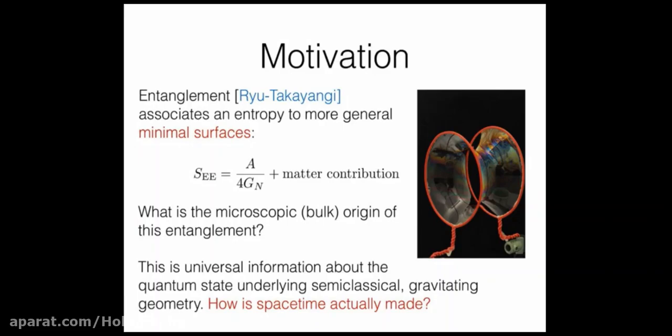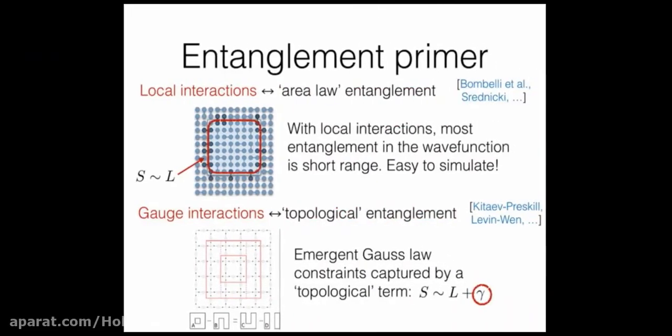If we can answer this question, we will learn something about the quantum state underlying the semi-classical gravitating geometry. That is to say, if we understand what is actually entangled that gives you this entanglement, we will learn something about how spacetime is actually made.